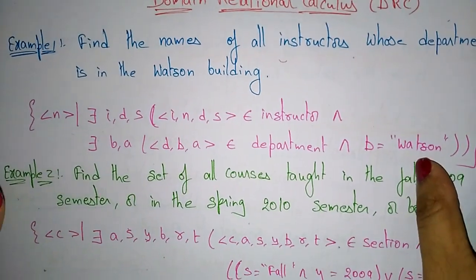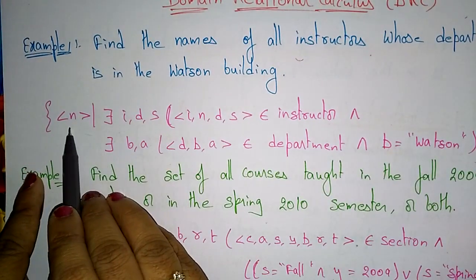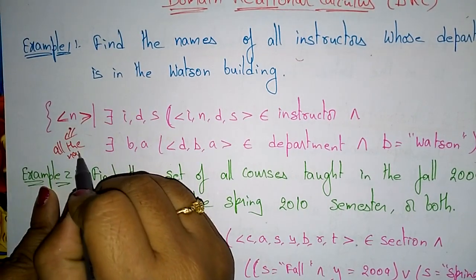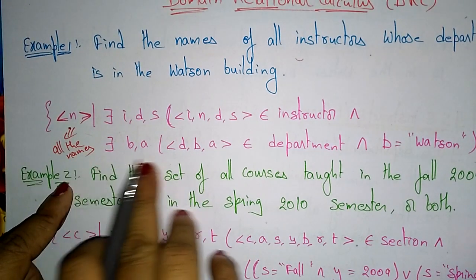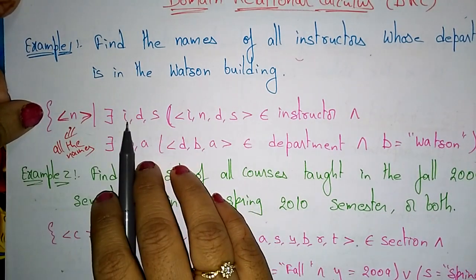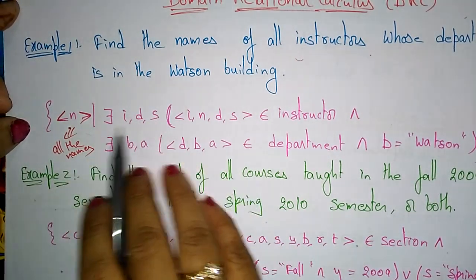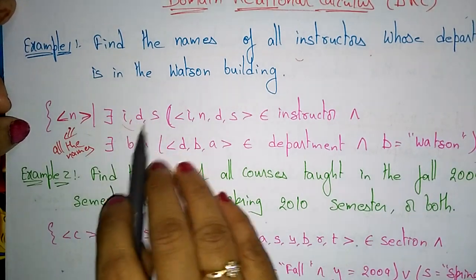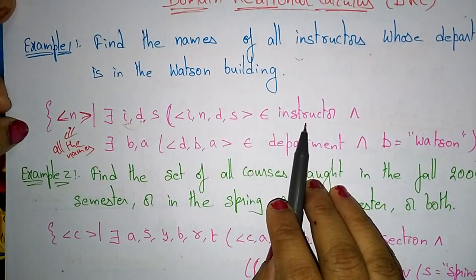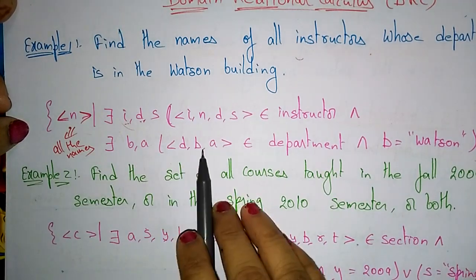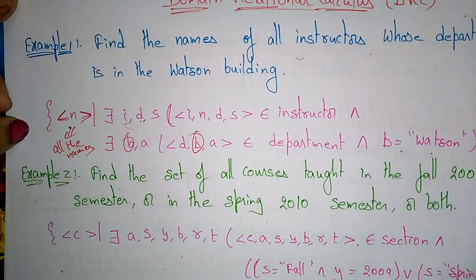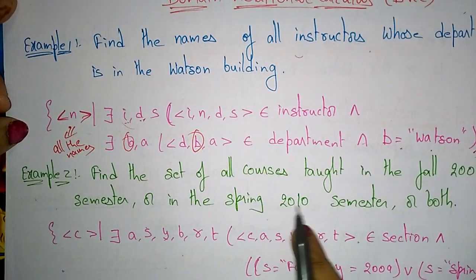Here I want to find the names, so I declare n as name — it will select all the names present in the department that belongs to the Watson building. I take ids and other attribute values that belong to the instructor relation, along with some values belonging to the department, where the building value must be Watson. Those matching names will be selected.